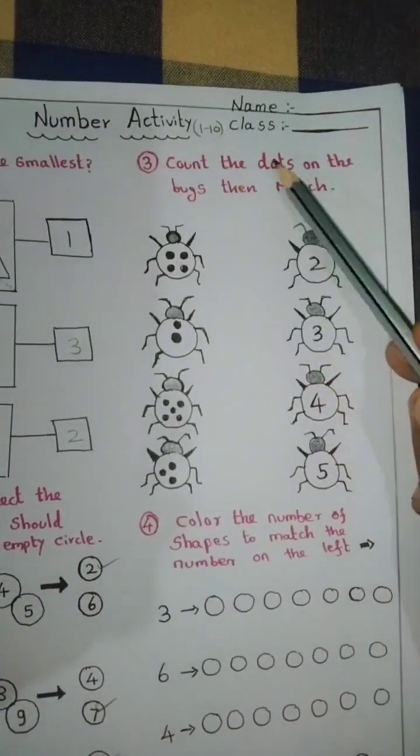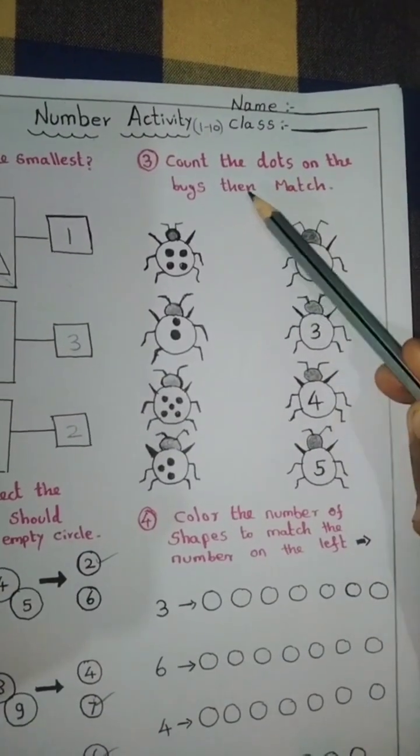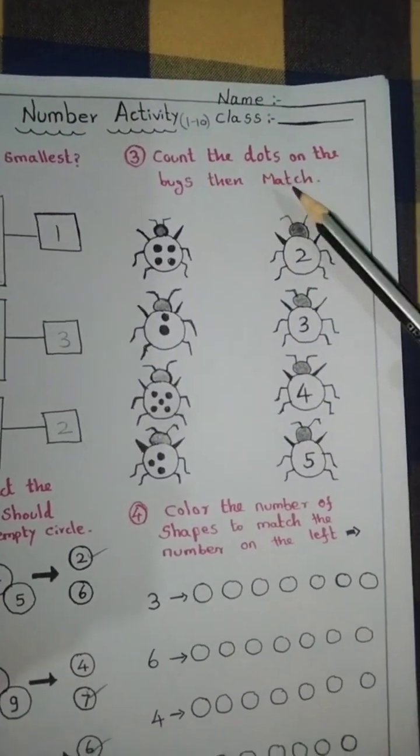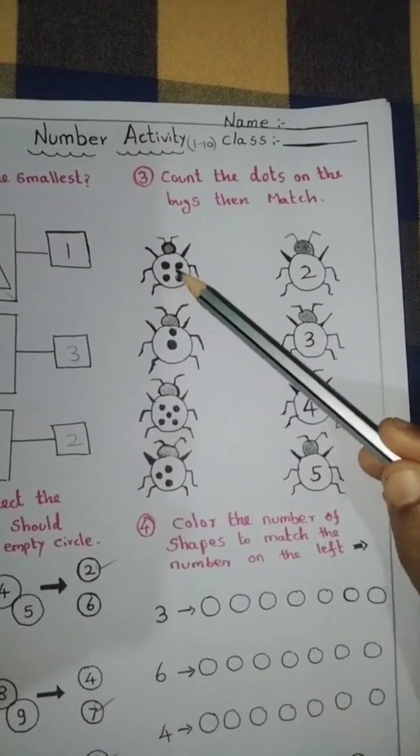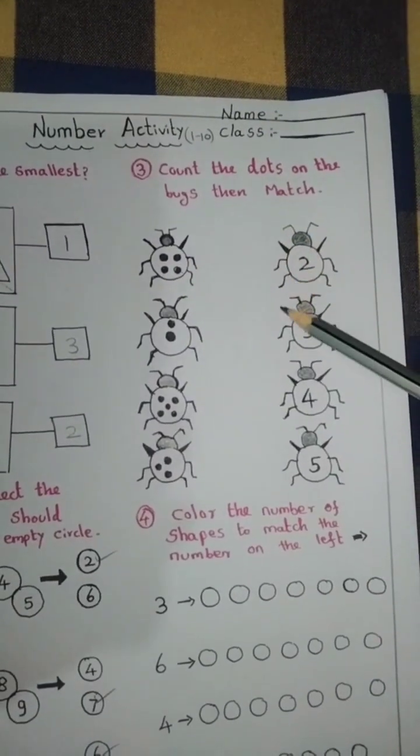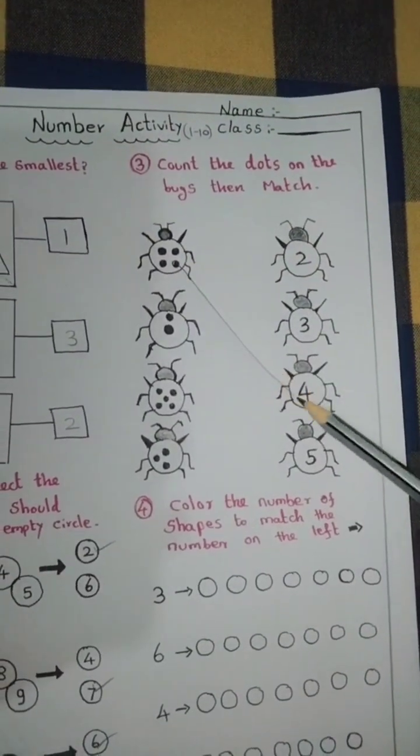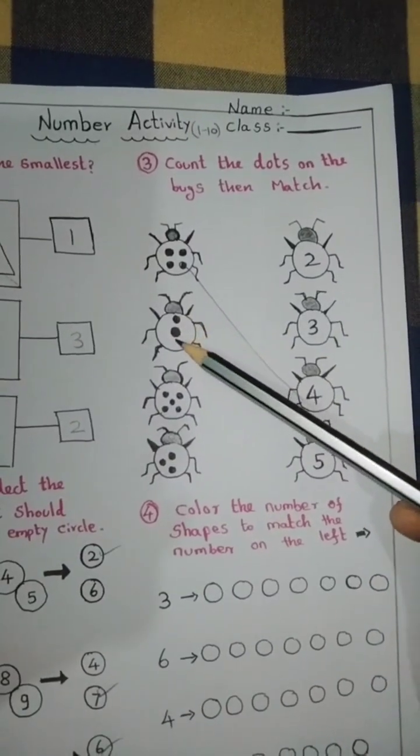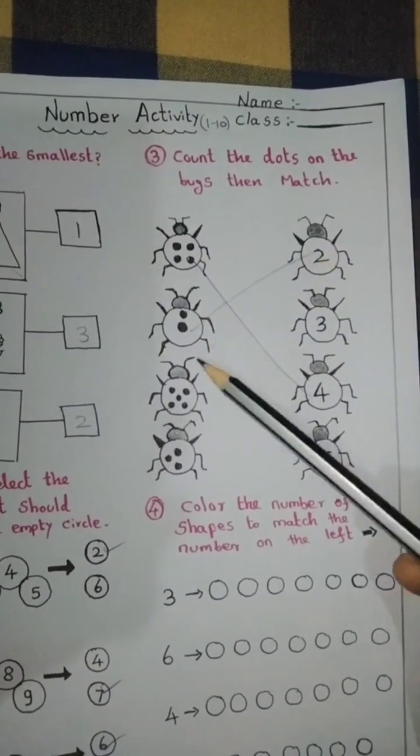Third, count the dots on the bug then match. 1, 2, 3, 4 dots. Number 4, this one. Match number 4. Next, 1 and 2, 2 dots match number 2.